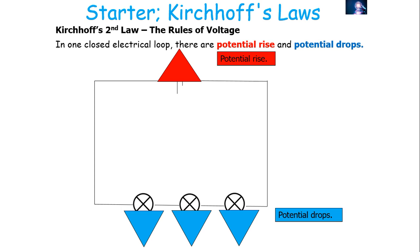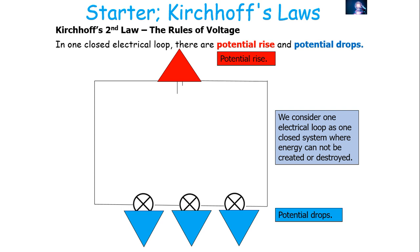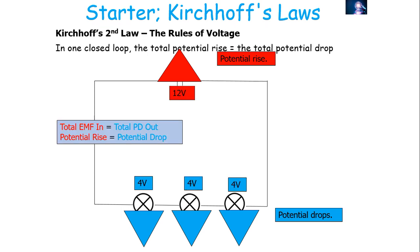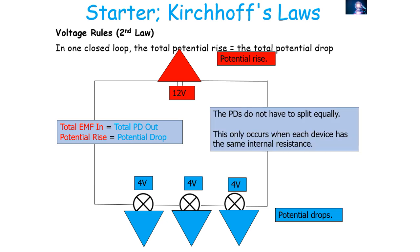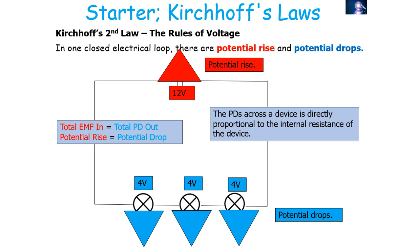In one closed electrical loop, there are potential risers and there are potential droppers. In a closed circuit where energy can't be created or destroyed, the total EMF provided by the potential risers has to equal the total PD out from the potential droppers. They don't have to split the potential difference equally — that only occurs when each device has the same resistance, because the potential difference across a device is directly proportional to the resistance of that particular device.